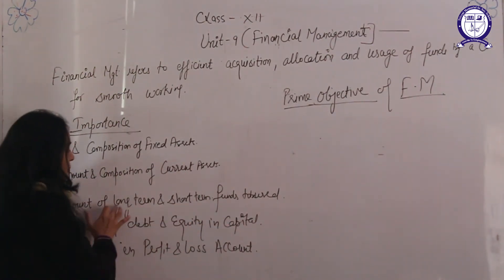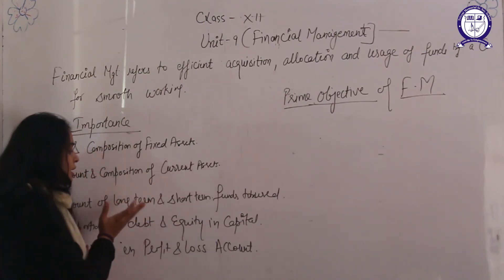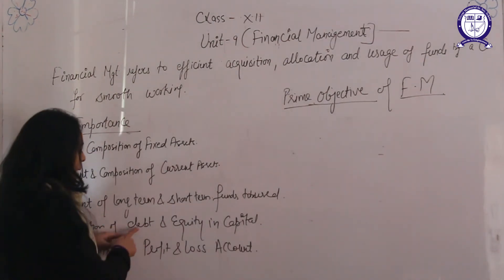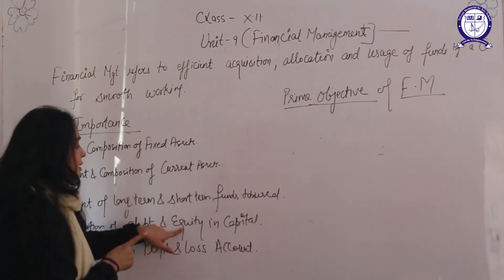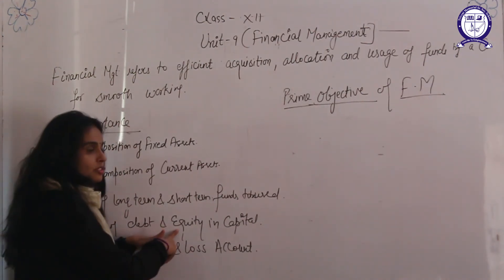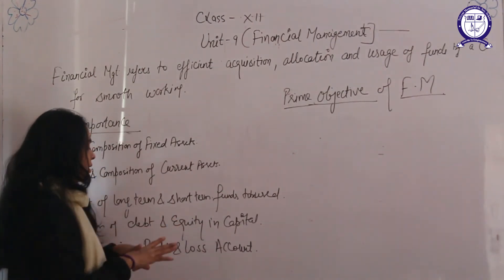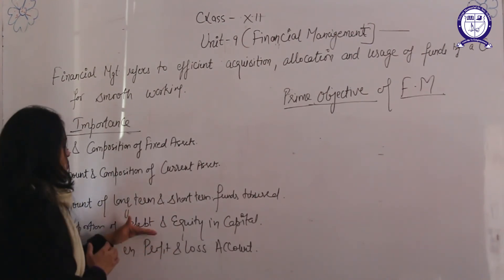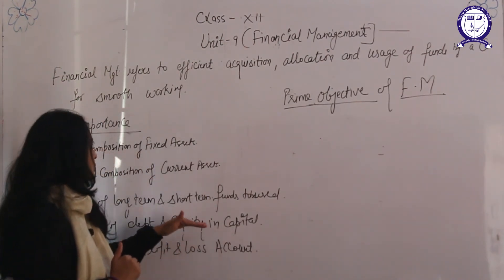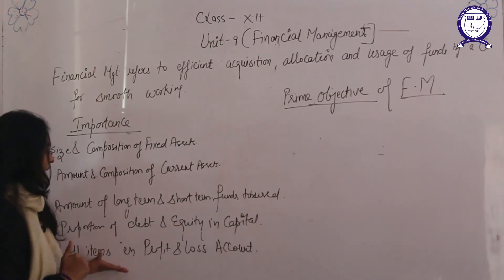The fourth importance is the proportion of debt and equity in capital. To arrange finance for the longer time period, both debt and equity sources are used. Debt is risky but cheaper; equity is not risky but is a costly source of finance. The manager has to mix both debt and equity — deciding how much to arrange through debentures or loans and how much through equity. This is another key decision under financial management.